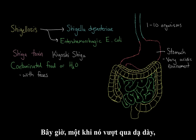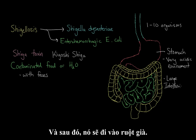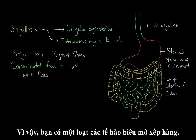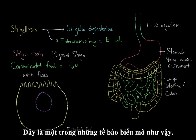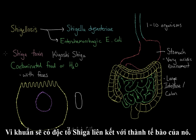Once it makes its way past the stomach, it'll enter the small intestine, and then after that it'll enter the large intestine, otherwise known as the colon. The large intestine is mostly responsible for absorbing water, and you have a whole bunch of epithelial cells that line the large intestine that will be absorbing water.